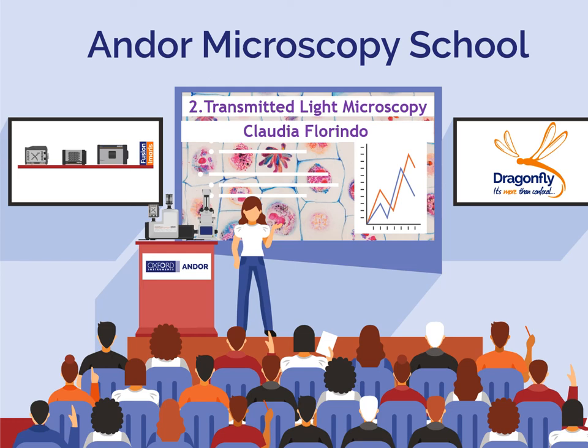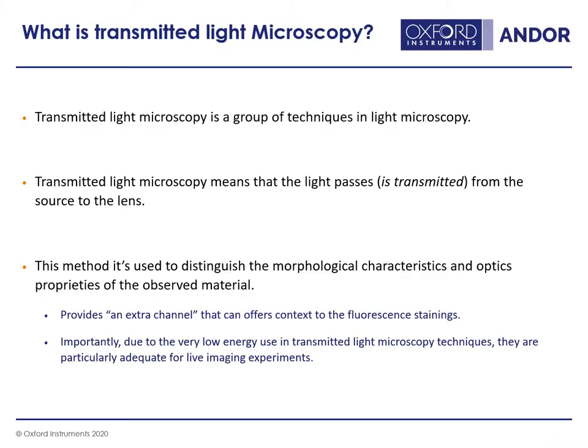Hello, thank you very much for joining the Andor Microscopy School. I will be talking to you today about transmitted light microscopy. Transmitted light microscopy means that the light is transmitted from the source to the lens, passing through the sample. This method is very useful to distinguish morphological characteristics and optics of the observed material, and it also provides an extra channel that offers context for fluorescent stainings.